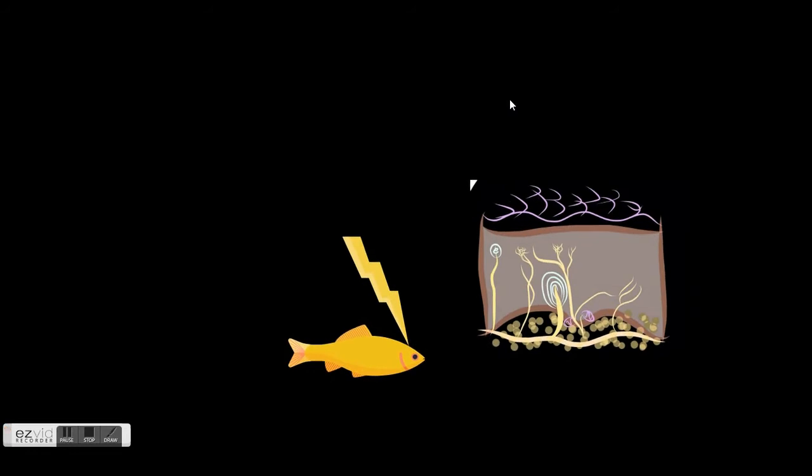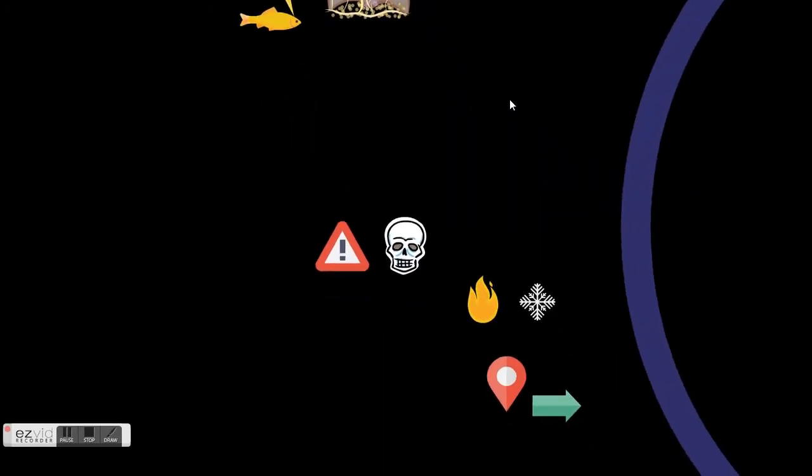Tactile senses orchestrate reactions every time the skin, subcutaneous tissues, and superficial mucosa encounter a mechanical difference in the environment. This can either be pain, which is called nociception, temperature, which is called thermoception, or position, which determines movement in space.